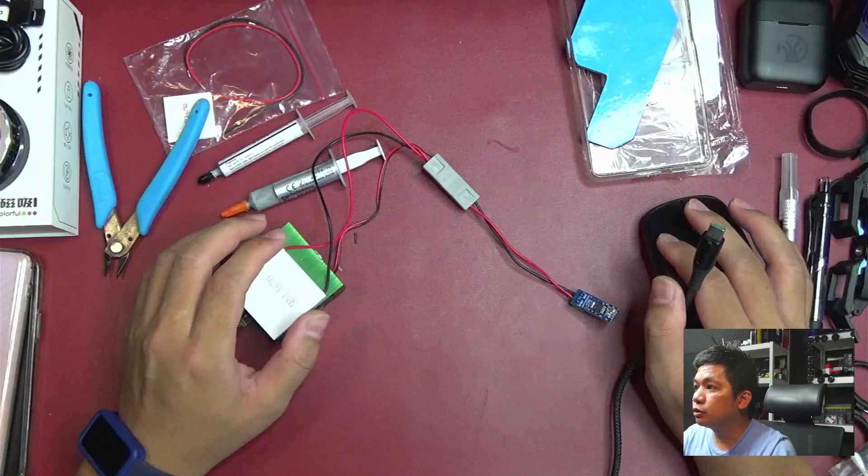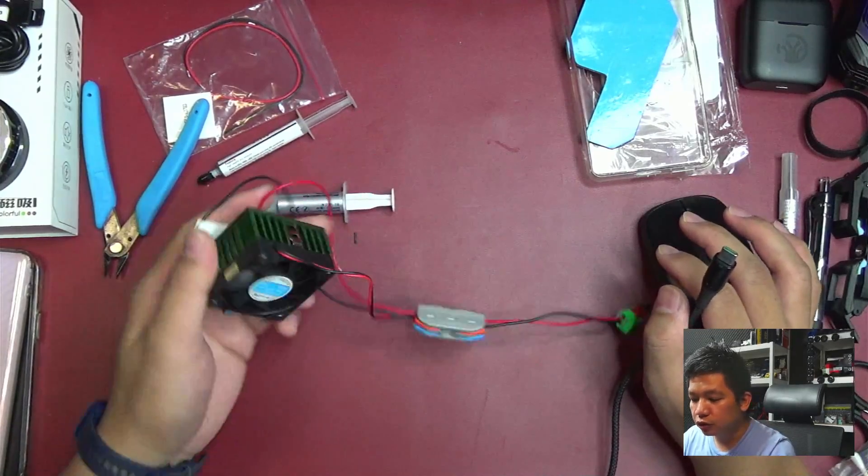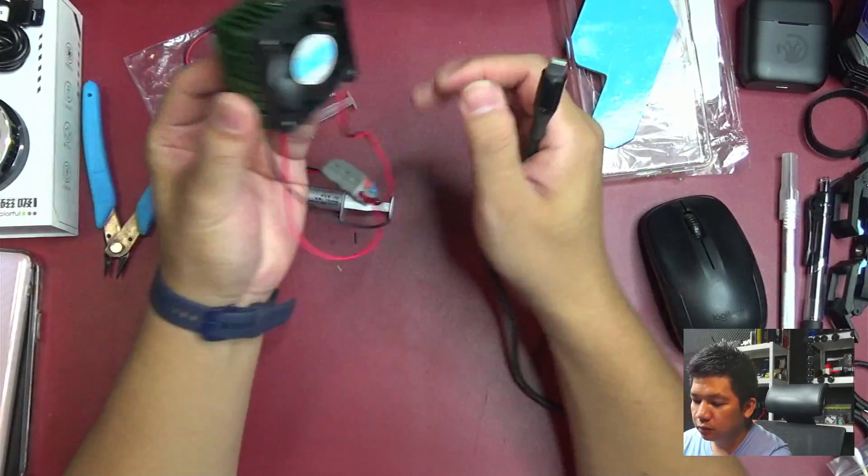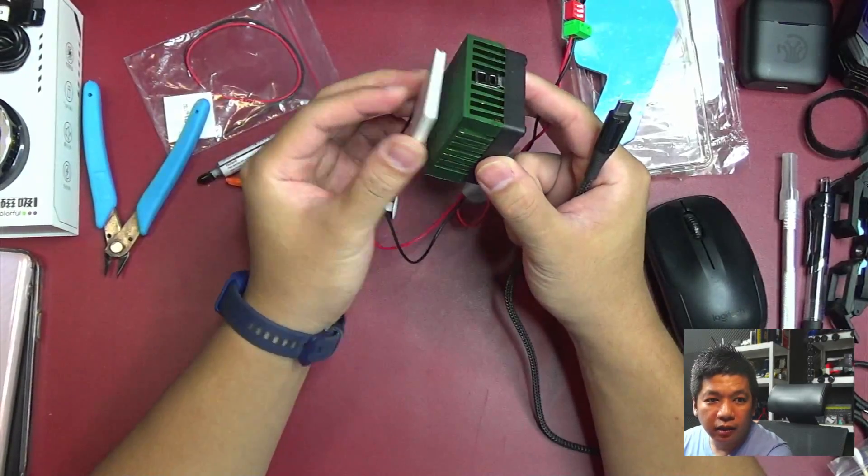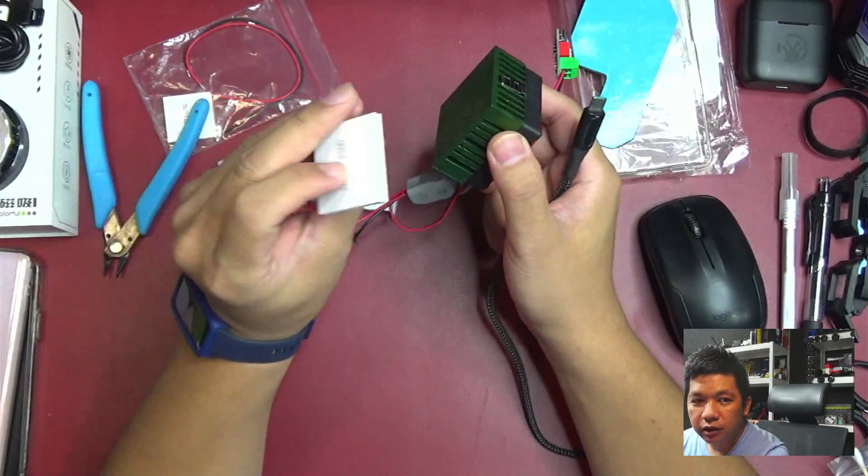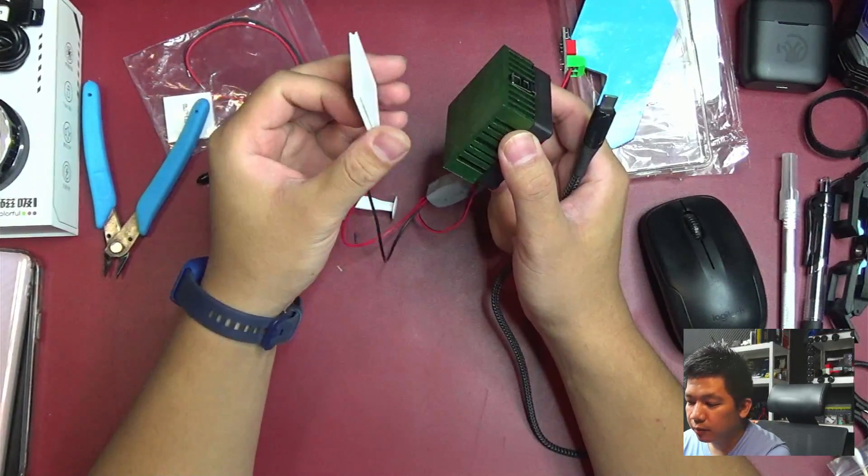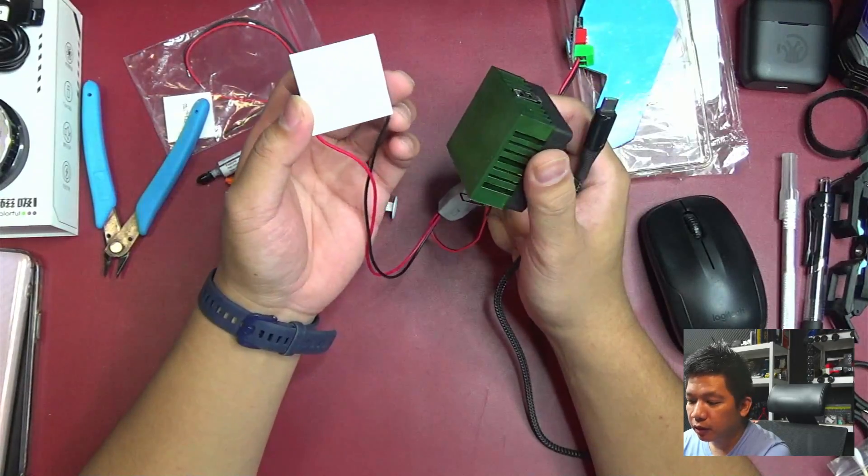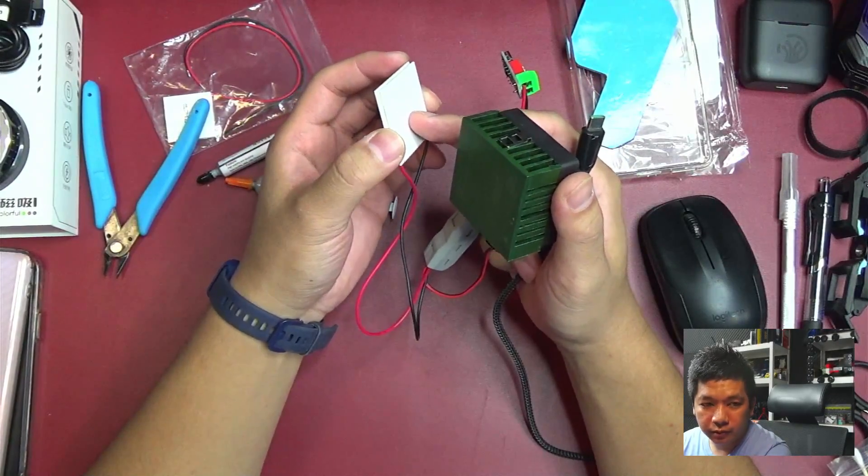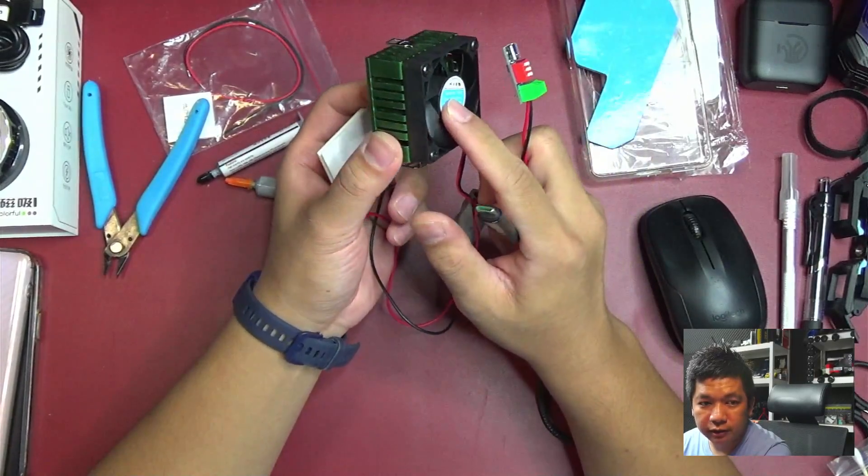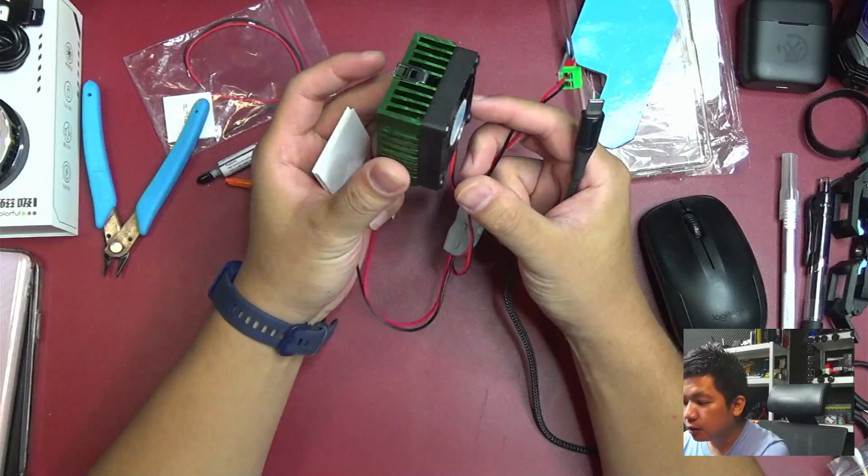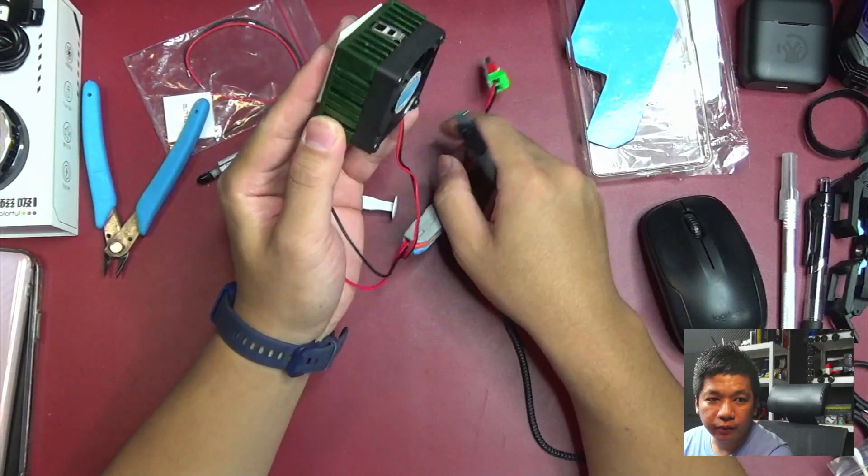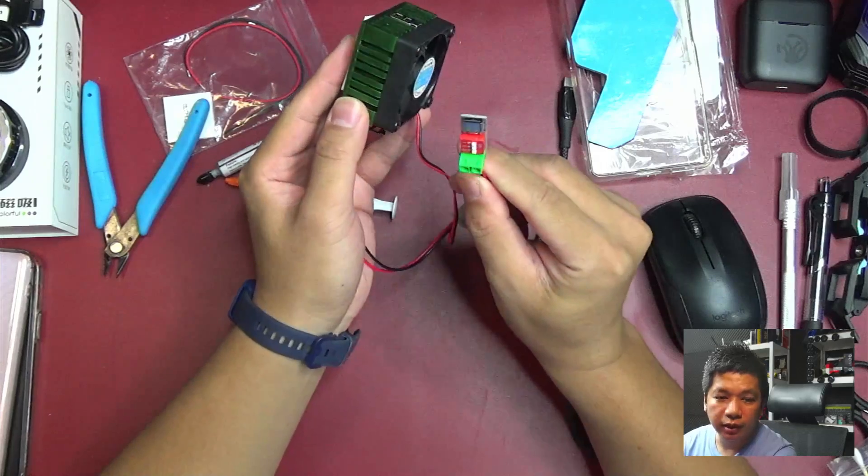Tips ngerawat cooler biar nggak cepat rusak dan performance-nya nggak gampang turun. Cooler itu sebenernya kan, cooler tinggi cuma gini doang sih, semua cooler ya, hampir semua cooler ada board-nya, ada peltier-nya, heatsink sama kipas. Peltier ada sisi dingin sama sisi panas ya. Semakin dingin sisi dingin, eh semakin dingin sisi panas, semakin dingin juga sisi dingin berarti. Yang buat ngedinginin sisi panas apa aja? Heatsink sama kipas. Teorinya kan gitu. Terus jadi harus ngapain aja nih yang kita rawat. Kalau udah ada ini, udah tau komponennya apa aja. Pertama heatsink.